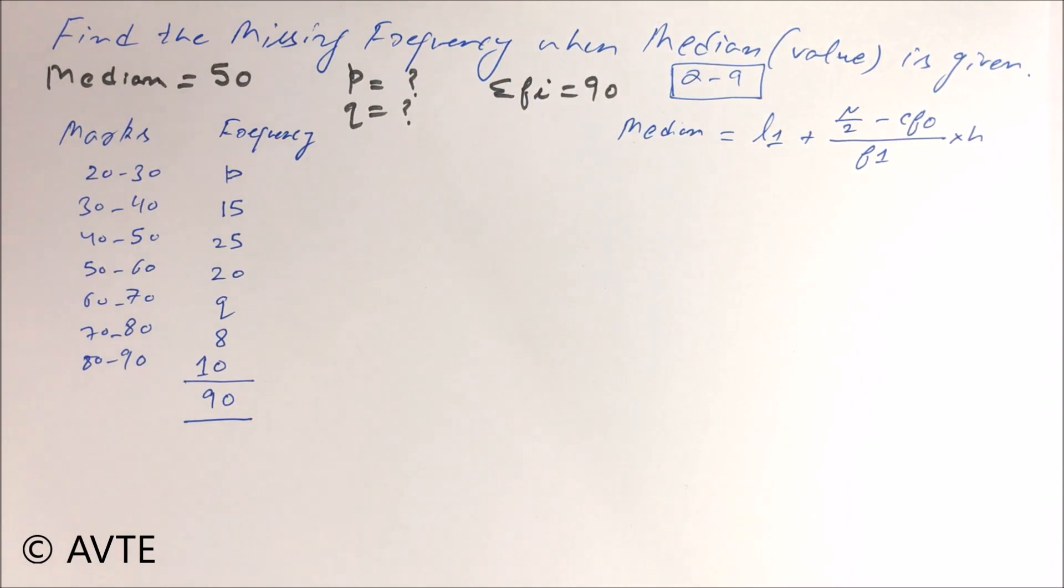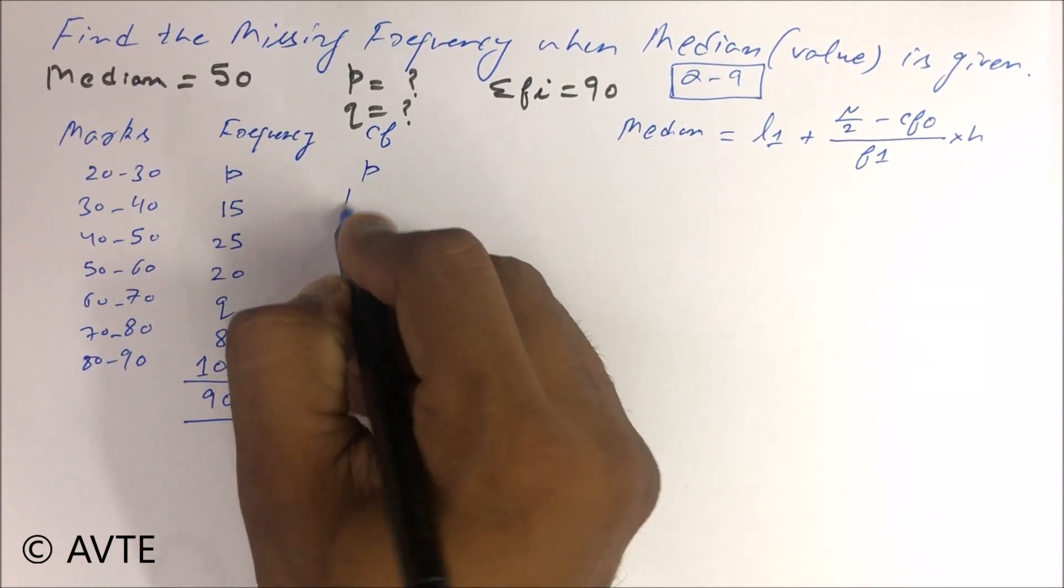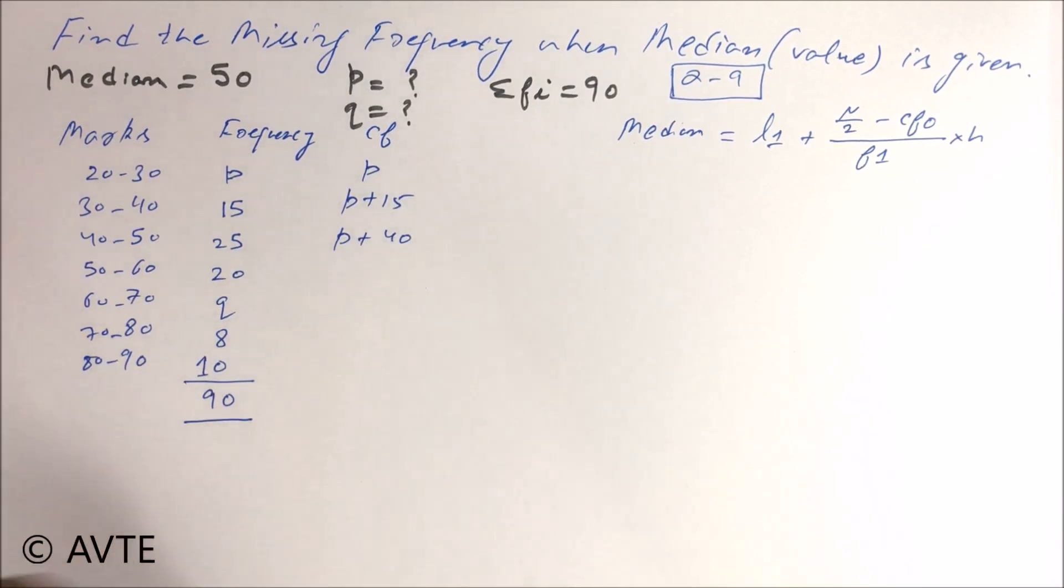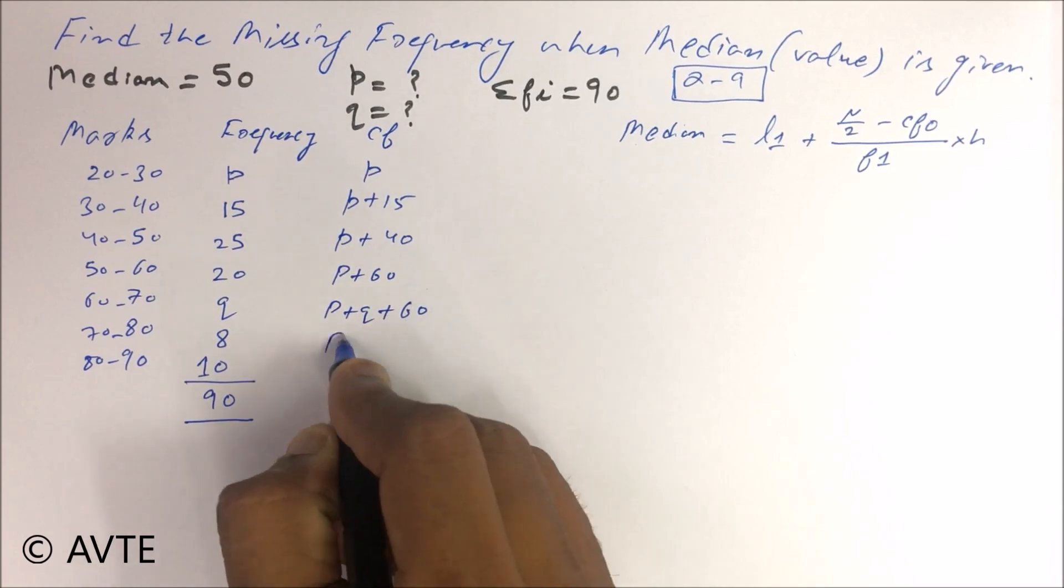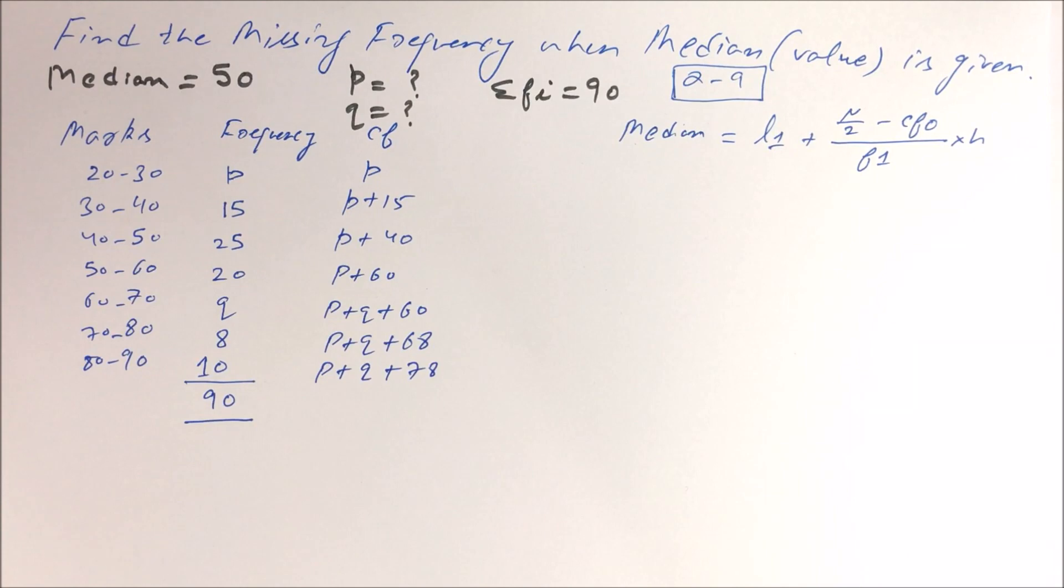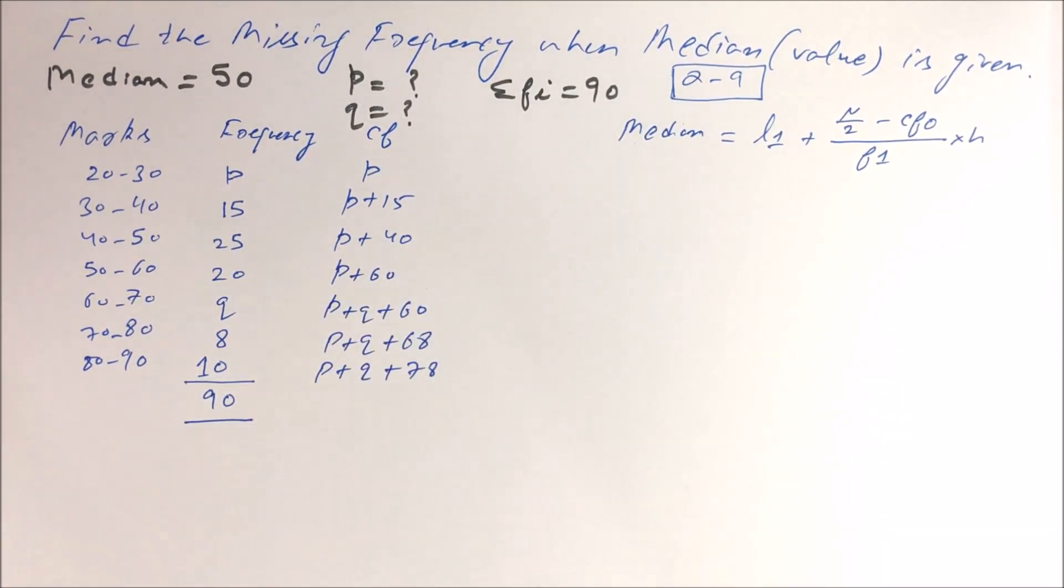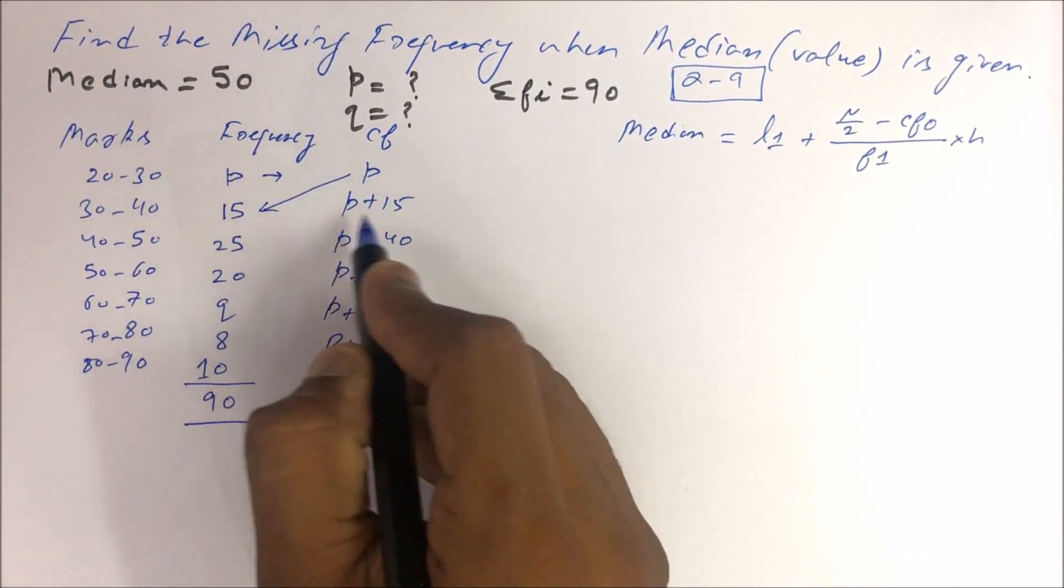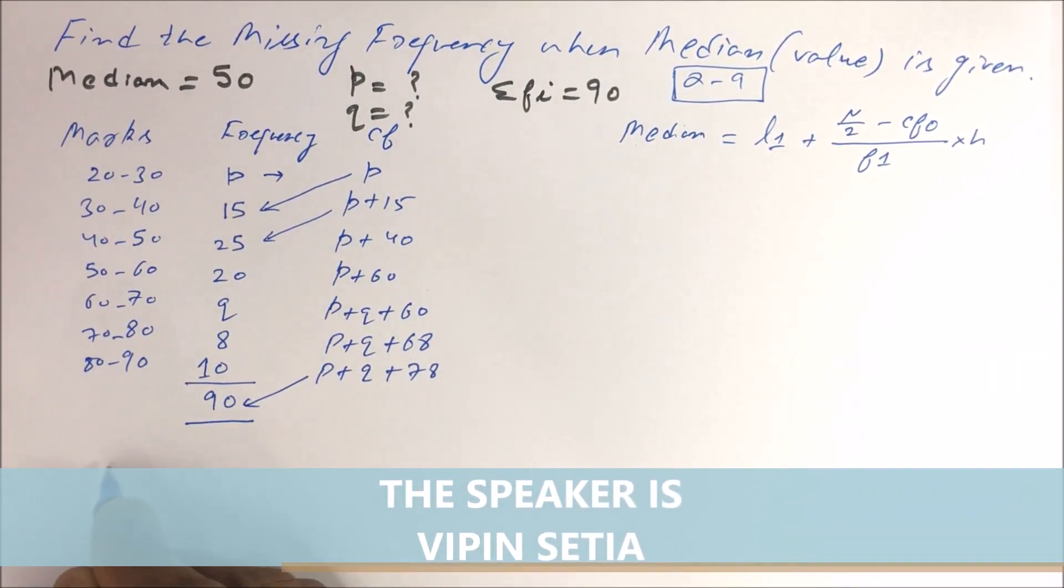Now we start with the cumulative frequency. This is P, this P plus 15, this is P plus 40 and so on. You know how to find the cumulative frequency, so this is we can first write P then we add P plus this and so on.